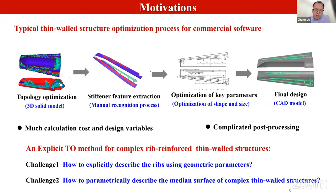These explicit methods have not been extended to shell structures with complex mid-surfaces. In commercial software, topology optimization of shell structures is also generally based on 3D solid models, which have the drawbacks of huge computational cost and require complicated post-processing. To develop an explicit topology optimization method for complex rib-reinforced shell structures, we need to address two challenges: how to explicitly describe the rib using geometric parameters, and how to parametrically describe the mid-surface of complex shell structures.